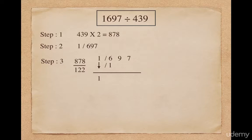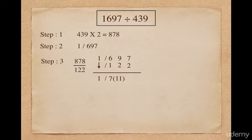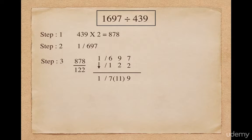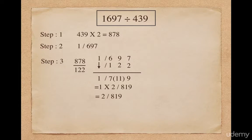To get the answer, I put 1 as it is; 1 multiplied with individual digits of 122 gives me 1, 2, and 2. To get the remainder, add all the digits of the second column, which gives me 7, next 11, and next 9. Out of this 11, consider 1 as a carry, so the final remainder will be 819. In the first step I multiplied the divisor with 2, so in the last step I will have to multiply the final quotient with 2. So the final answer is quotient 2 and remainder 819.